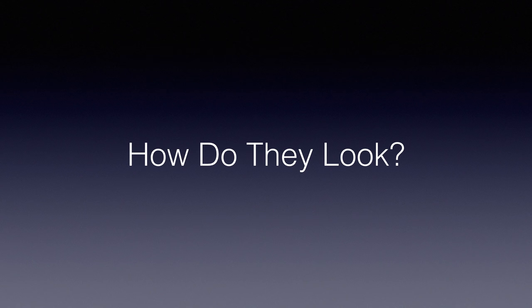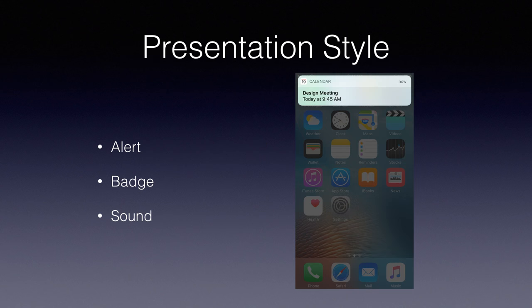What do they look like? I've used a screenshot from iOS 10 in case you haven't seen it — they look a little bit different. They come up like this now, and we have an alert, badge, and sound. You've all received a notification at some point. Optionally you have a sound and a badge as well, but typically if you have an alert, you get an alert.